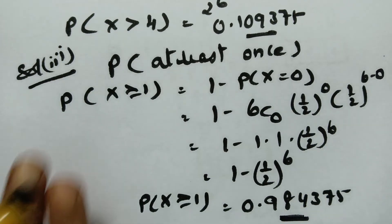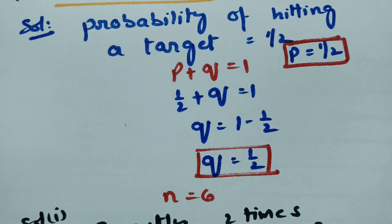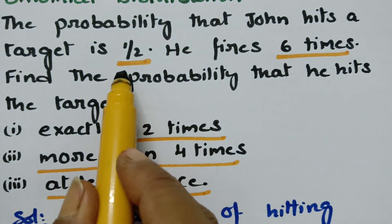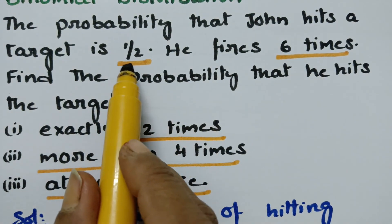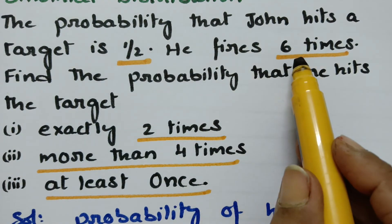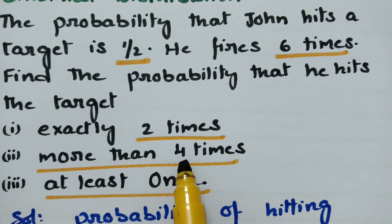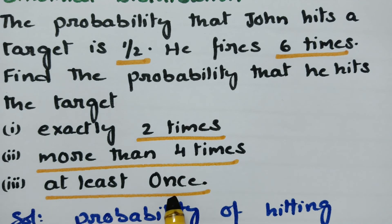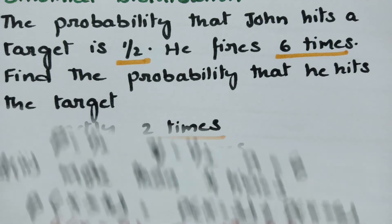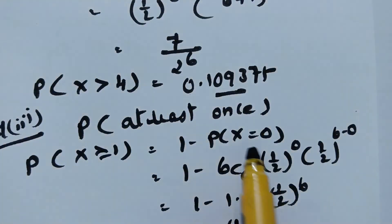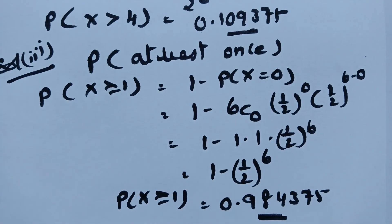So this is how we solve this problem. To summarize: P equals half, Q equals half, N equals 6. For exactly 2 hits, r equals 2. For more than 4, we calculate for 5 and 6. For at least once, it is easy to calculate as 1 minus P(X = 0). Thank you so much for watching and staying till the end.